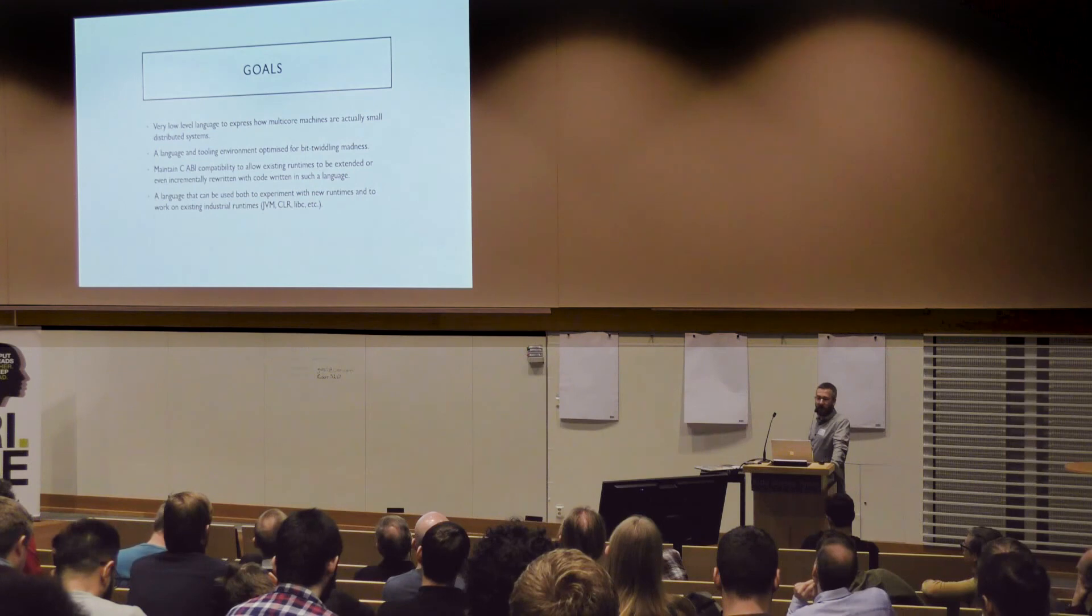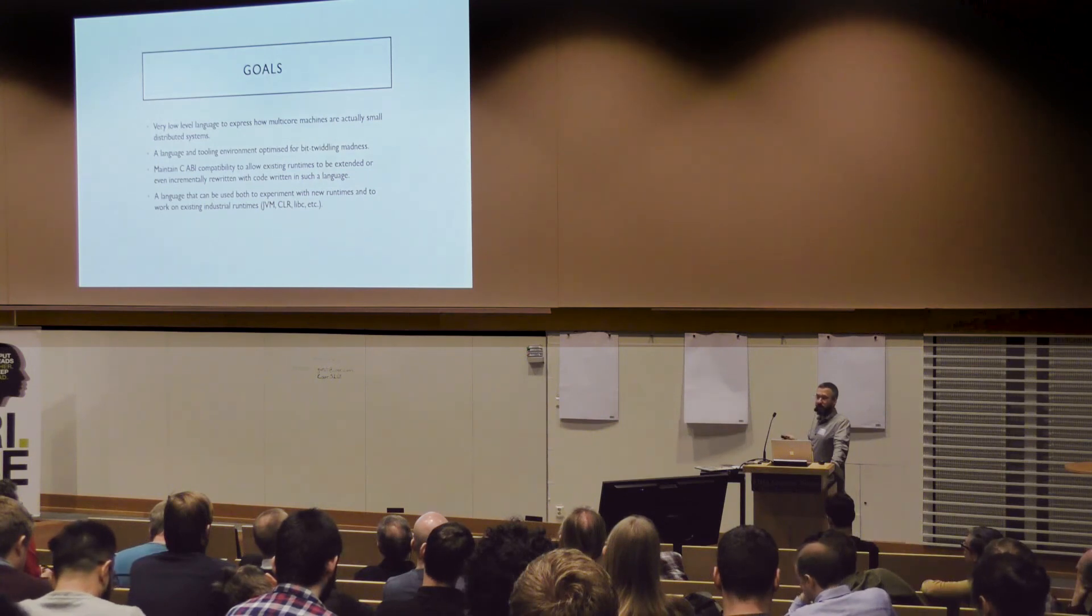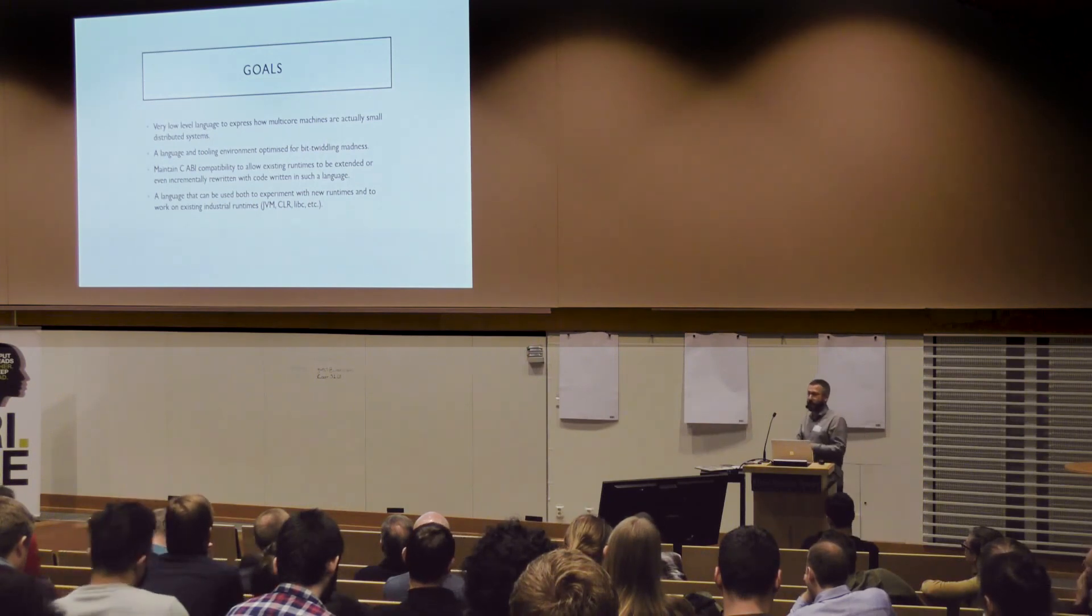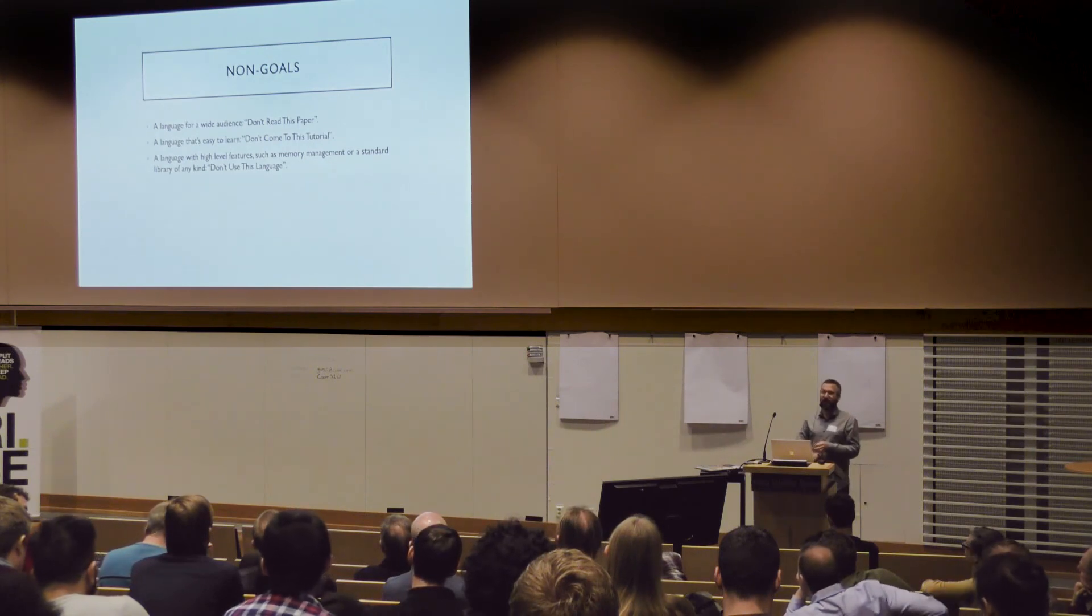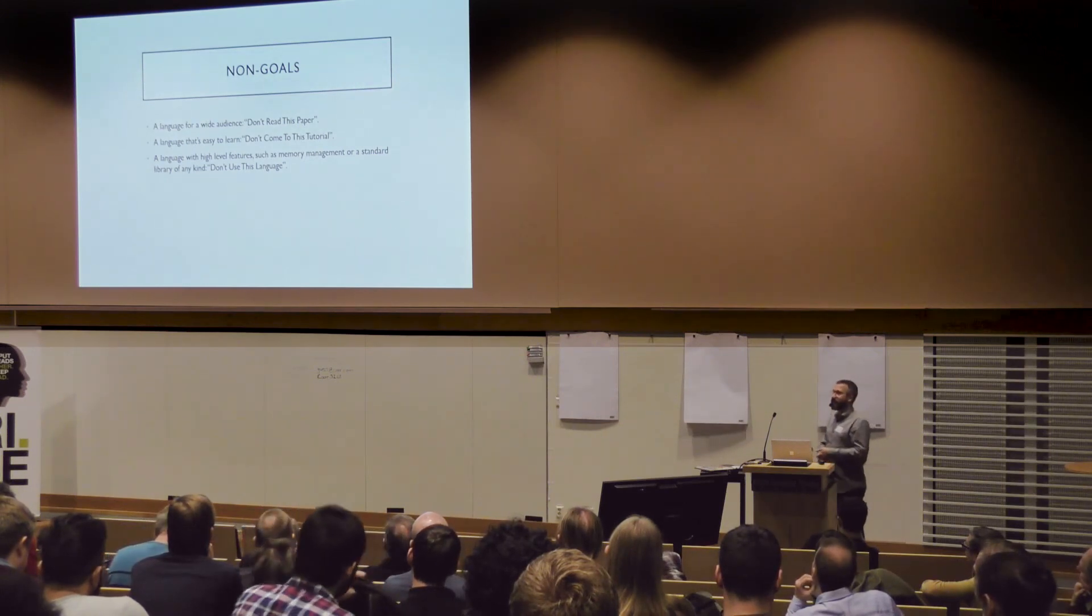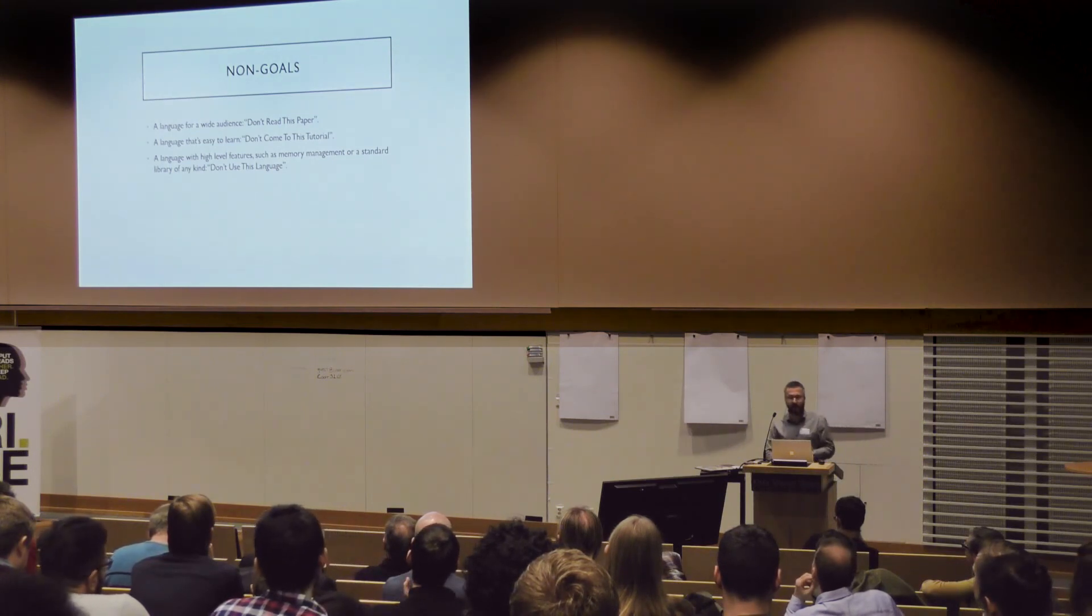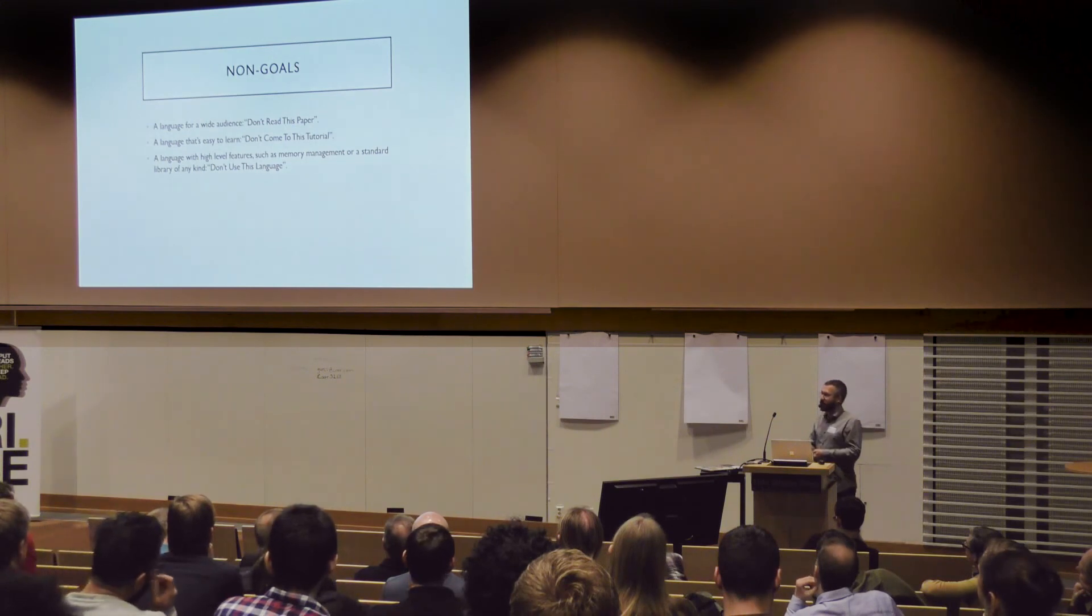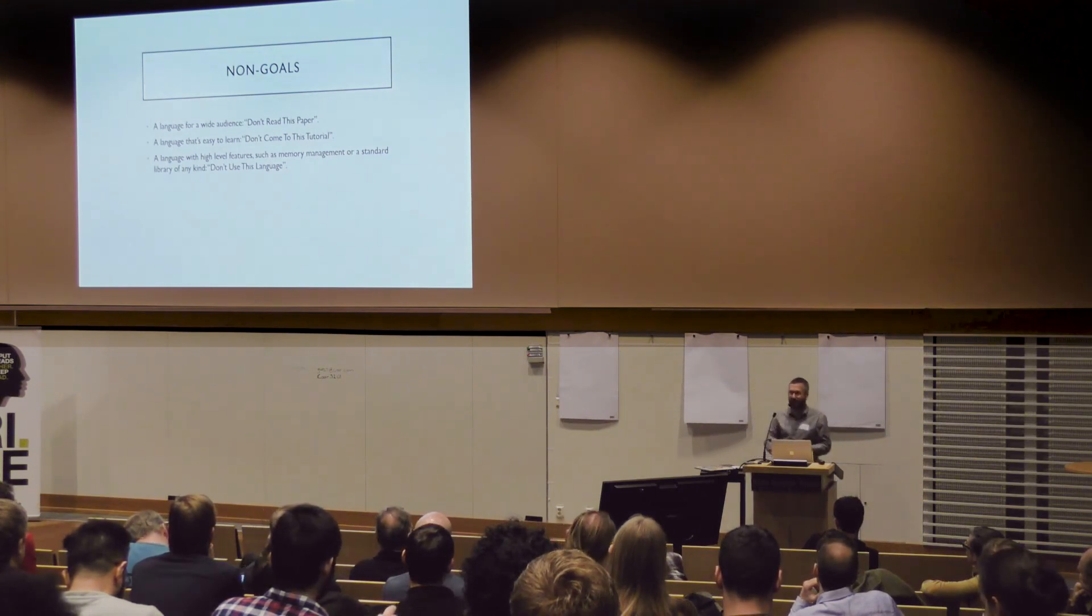We want this low-level language. We want a tooling environment. We want C-A-B-I compatibility because we want to be able to extend existing runtimes. Maybe even incrementally rewrite existing runtimes. We don't want to say, let's start over with brand new runtimes. No, no, no, no, no, no touch. On the other hand, what we do want is a language that can be used to experiment with new runtimes, as well as to work on existing industrial runtimes. Non-goals include a language for a wide audience. I'd love to have some papers called Don't Read This Paper. Another non-goal is a language that's easy to learn. I'd love to give a talk called, a tutorial called Don't Come to This Tutorial. And finally, a language with any kind of high-level features, memory management, standard libraries, any of this useful stuff, so that you can have a language that is basically has a subtitle of Don't Use This Language. This would be for a very, very specific audience. On the other hand, I think it's kind of exciting. Anyway, thank you very much.